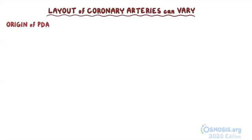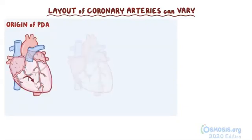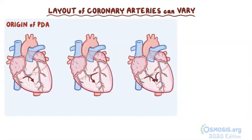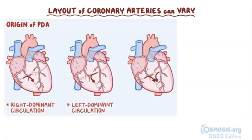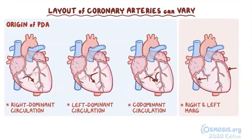The anatomical layout of the coronary arteries can vary considerably. The most common variation is the origin of the posterior descending artery, as it can branch off from either the right or left coronary artery, sometimes even both. If the PDA is supplied by the right coronary artery, it's described as right dominant circulation — the most common. If it arises from the left circumflex, it's left dominant circulation, which is less common. If it arises from both, it's known as codominant circulation, which is even rarer. There are even more unusual variations, like the presence of a left marginal artery and right marginal artery.